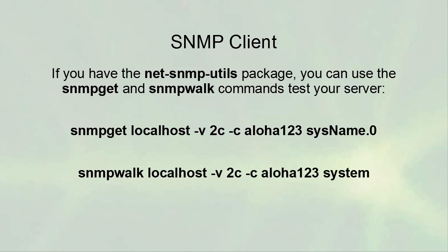To verify things are working, use the snmpget and snmpwalk commands from the net-snmp-utils client utilities. The following examples assume your community string is 'aloha123' and you are connecting to localhost, though you can specify a remote server IP. Pass the SNMP version using '-v 2c' or '-v 1', and pass the community string with the '-c' option. With snmpget, retrieve the system name using 'sysName.0'. With snmpwalk, walk the entire system set of information — it will list all OID values until they are exhausted.